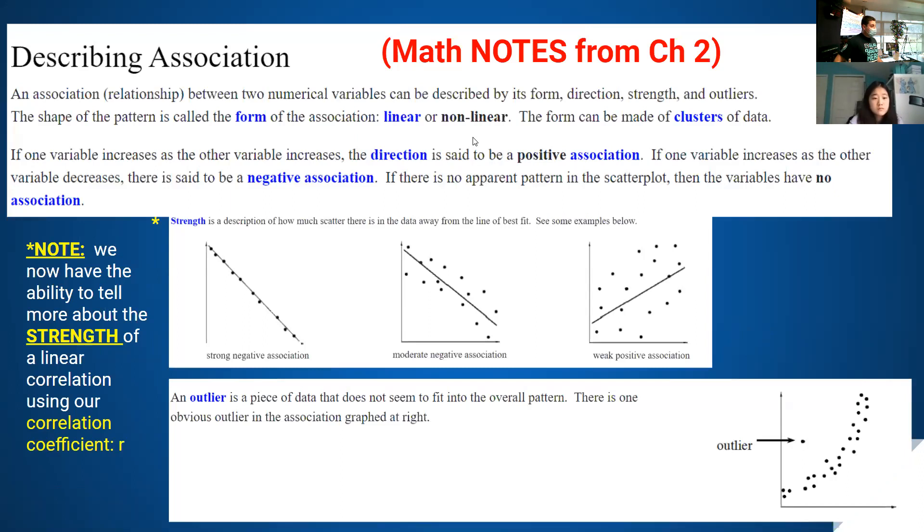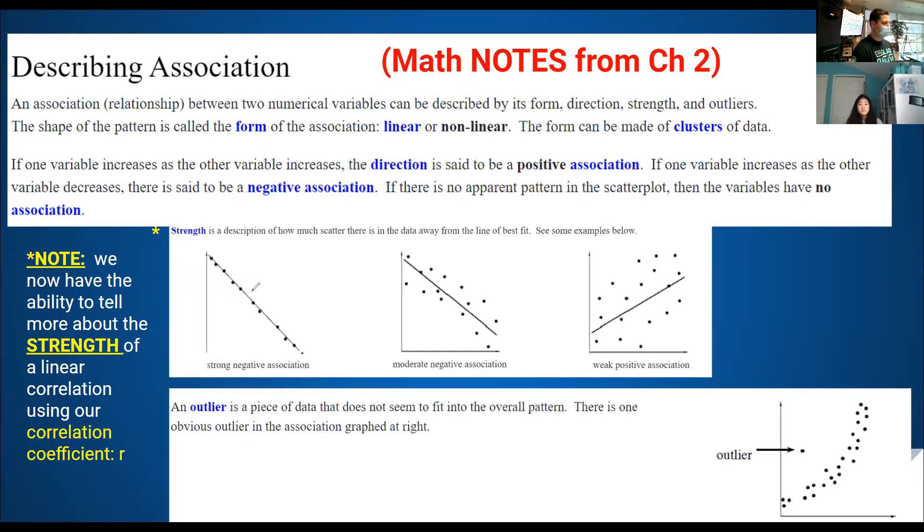So here's a lot on this screen right here, so just take a look. Do not copy this down. This is in the math notes section from chapter two, so this is just like a recap of what I just described. That correlation coefficient, that's your r value. So as you can see in this picture, the graph on the left, which I'll circle right here so you can see this graph.